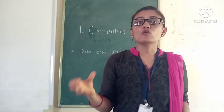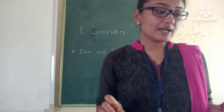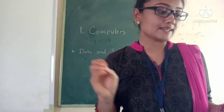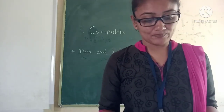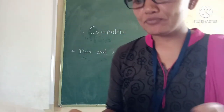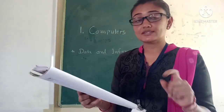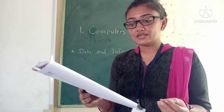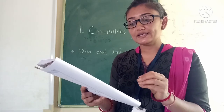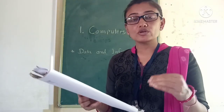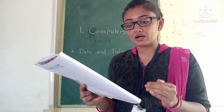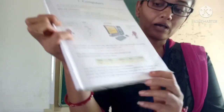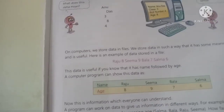Here is an example of data stored in a file. Data: Raju, 8. Seema, 9. Balak, 7. Salman, 6. Some names and numbers. This data is useful if you know that it has name followed by age.